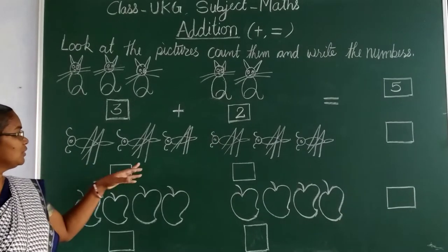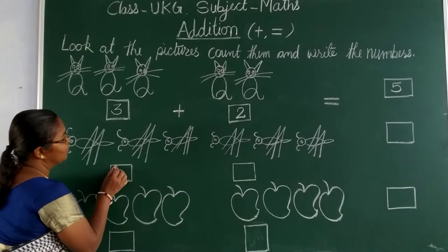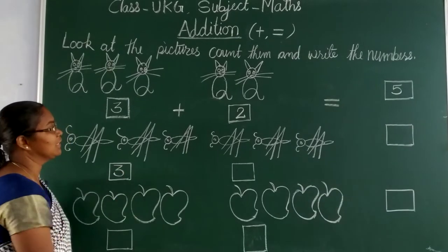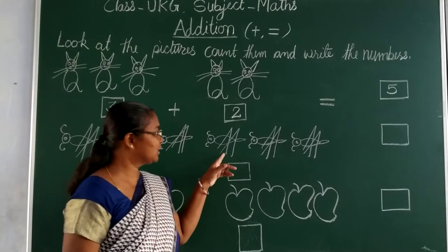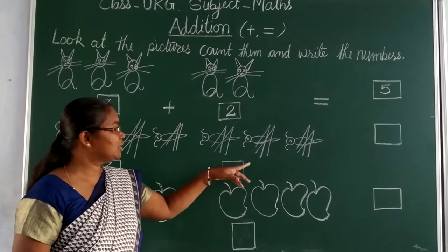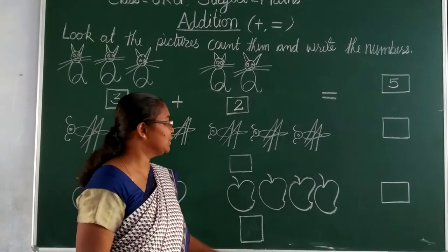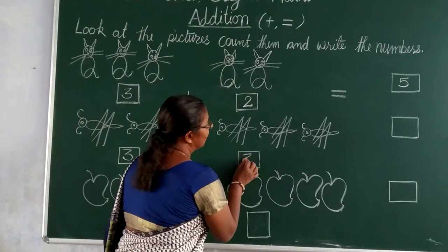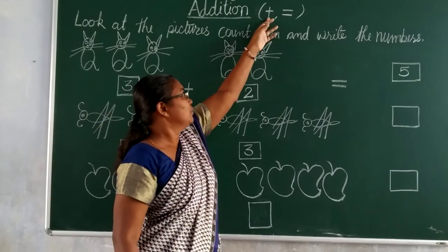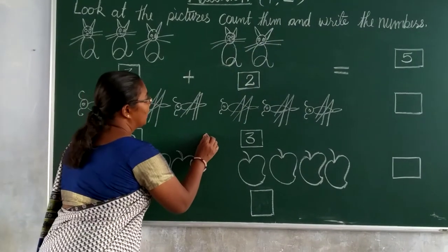1, 2, 3. We have to write number 3. Again next group: 1, 2, 3. We have to write number 3. Then we put plus.